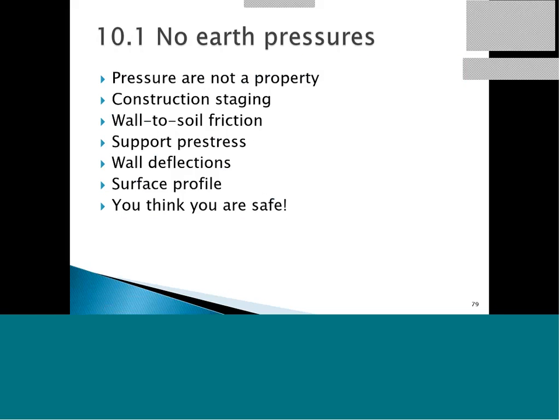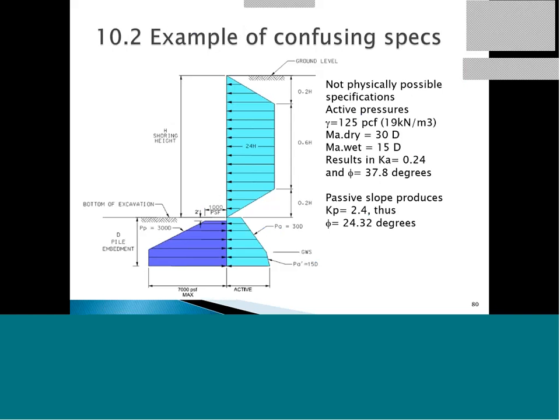When you get earth pressures on your design contracts, be very considerate. I will never specify lateral earth pressures; I will specify some general acceptance methods and soil properties. Lateral earth pressures are not properties — they depend on the structure, wall-to-soil friction, support pre-stress, wall deflection, and surface profile. When you get an apparent earth pressure envelope or something like that, you might be safe under the same conditions, but if you do something totally different, that same envelope might not be conservative.